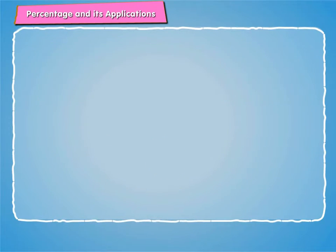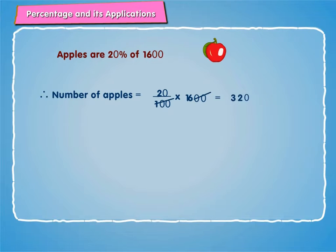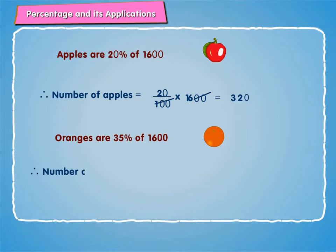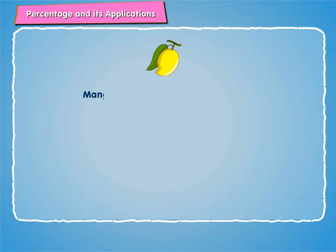Here we are given that apples are 20% of 1600. Therefore, number of apples is equal to 20 by 100 into 1600, which is equal to 320. Oranges are 35% of 1600. Number of oranges is equal to 35 by 100 into 1600, which is equal to 560. Mangoes are 100 minus 20 minus 35 percent of 1600.